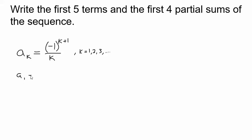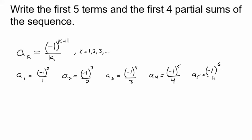a sub 1 is going to be negative 1 to the second power over 1. a sub 2 is going to be negative 1 to the 2 plus 1 or third power over 2. a sub 3 is going to be negative 1 to the 3 plus 1 or fourth power over 3. a sub 4 is negative 1 to the fifth power over 4 and a sub 5 is going to be negative 1 to the sixth power over 5.